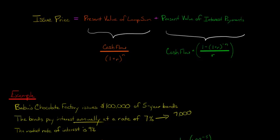Now, it just so happens that the market rate of interest at the time that Babu's Chocolate Factory issues these bonds happens to be 9%. So you might be thinking, why doesn't Babu's just pay interest at a rate of 9%? Well, it takes a while to get these bonds ready. There's a lot of paperwork and so forth. It could have been two months ago that Babu's put together this bond issuance,